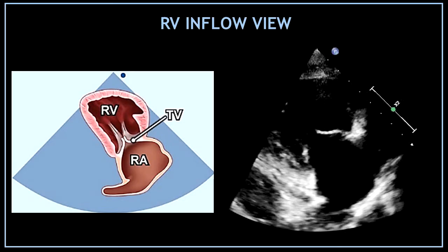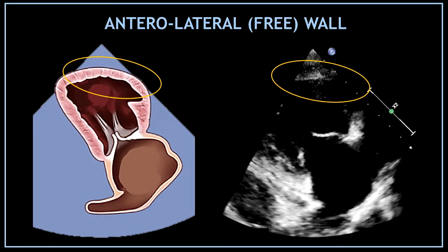Let's start with the right ventricular inflow view. This view looks very similar to the apical two-chamber view. However, instead of focusing on the left heart chambers, in this view we are going to concentrate on the right heart. The first wall visualized at the top of the screen is the anterolateral wall, also known as the right ventricular free wall.